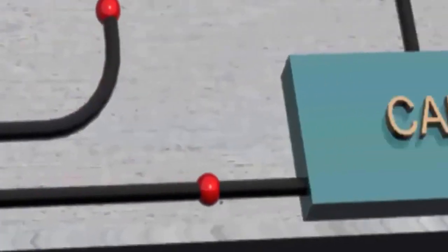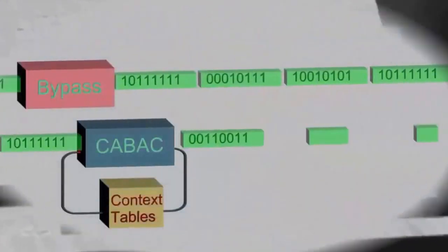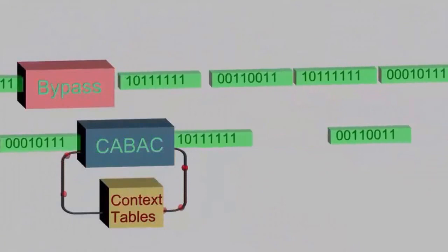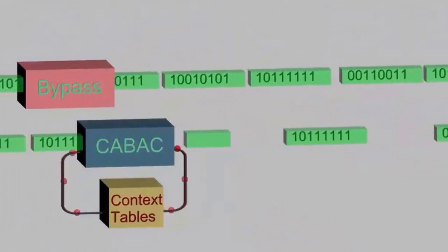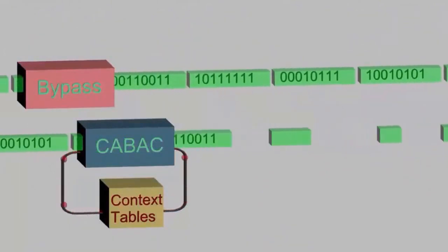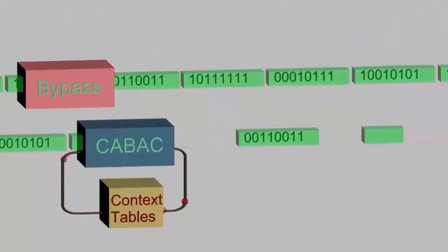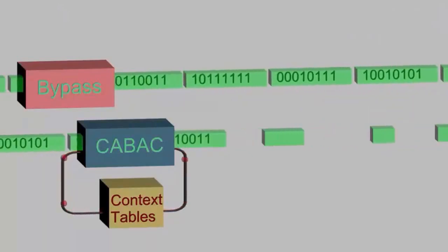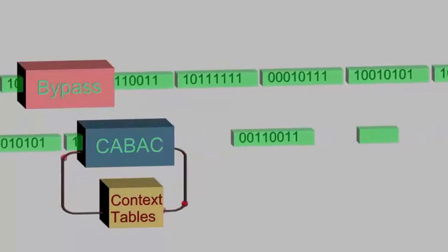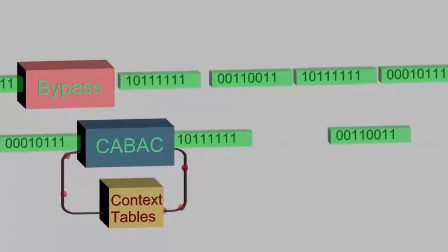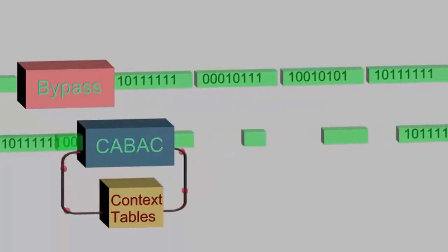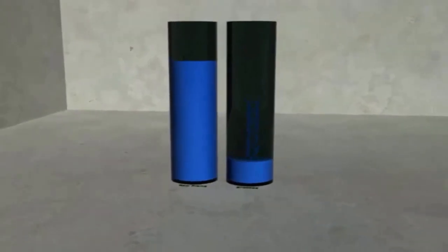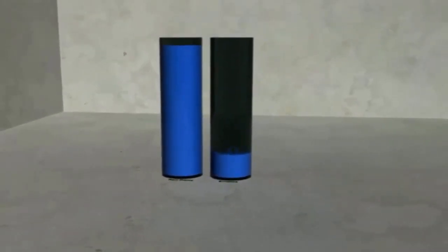The coefficients are then sent to the CABAC — context-adaptive binary arithmetic coder. It has two modes: arithmetic coding mode and bypass coding mode. In arithmetic coding mode, it looks for similar context elements and groups them together, reducing the number of bits that need to be sent. The combination of all these modules results in something close to 50 times compression.